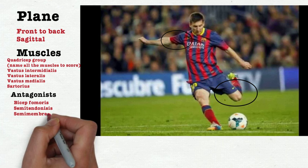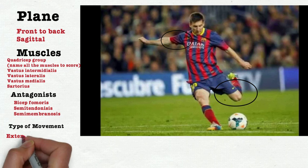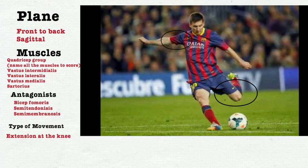And then the antagonist is, again, all of the hamstring groups because it's the opposite. And then finally, the type of movement we're looking at there is an extension at the knee joint. Okay, so you can have a go at the shoulder one yourself.